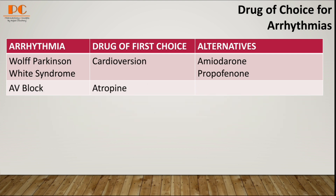For Wolff-Parkinson-White syndrome, we can use cardioversion as the first choice, and amiodarone and propafenone as alternatives. And for AV block, we can choose atropine as the first choice drug.